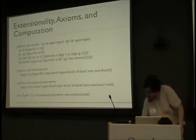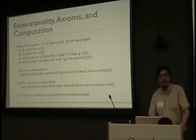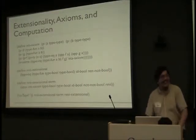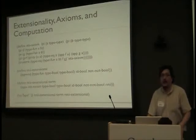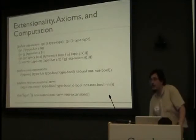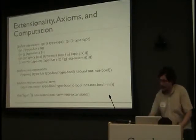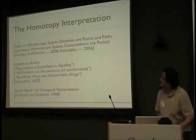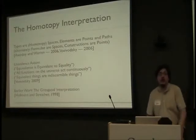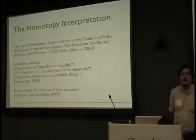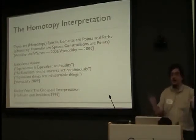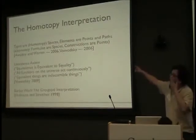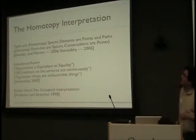Now we come — I am moving people already, but Ray said I could take as long as I want. We've gotten through all the stuff on Martin-Löf type theory, and now we're going to talk about homotopy interpretation. Way back in our beginning slides, we had types are propositions, programs are proofs, and all the different variations. Here's a whole new one: types are homotopy spaces. Elements are points and paths.